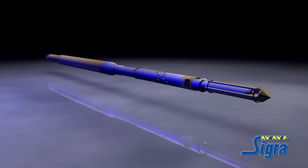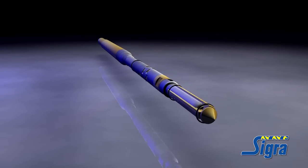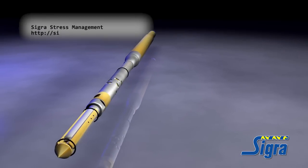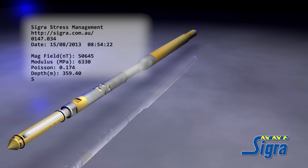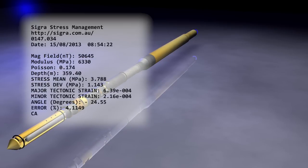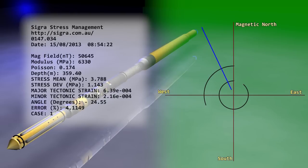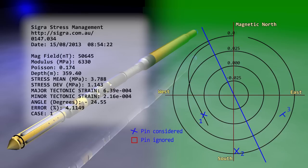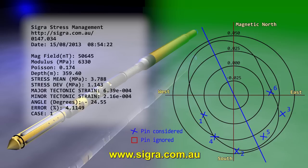Data stored within the stress tool is extracted to a laptop and processed. The delivered report includes a material test report, stress and tectonic strain analysis and the ratio of material stress strengths. As orientation of the tool is measured, the direction of the principal stresses can be found as well as their magnitude. SIGRA will also endeavour to interpret the stress regime.